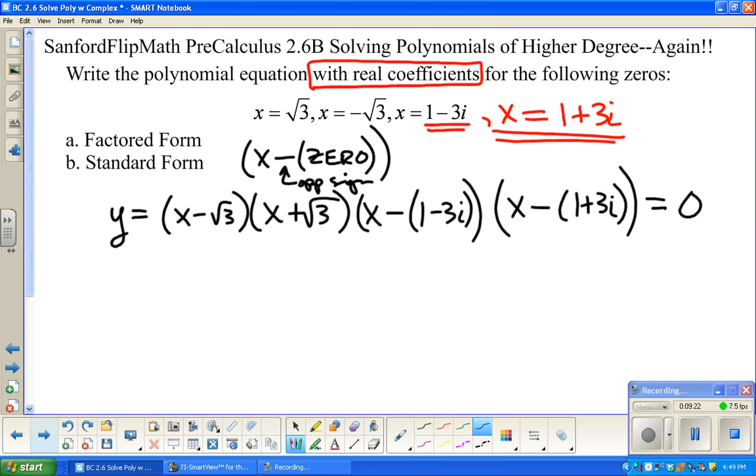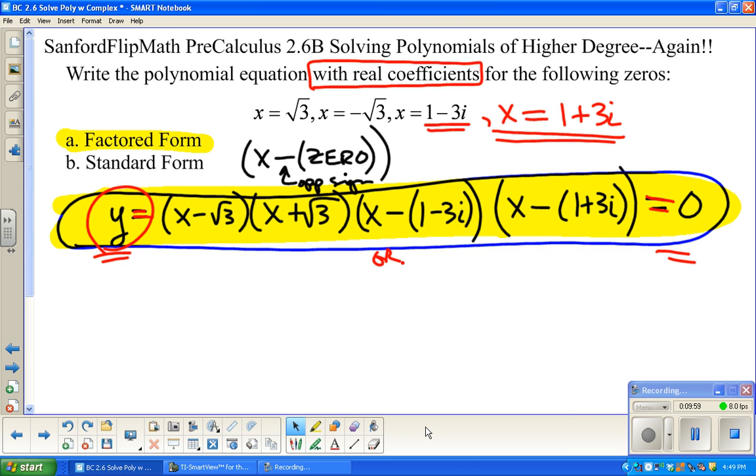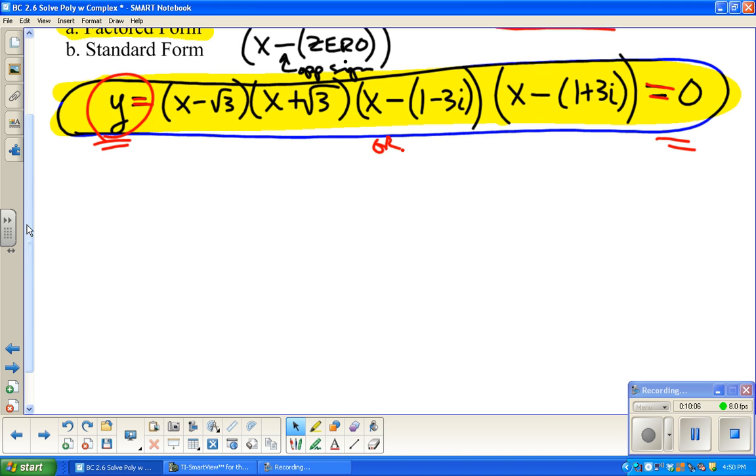So a couple things that need to happen here. First of all, this is factored form. So as far as that's concerned, factored form, here it is. Now, if I want to do standard form, then I've got a lot of multiplying to do. You don't need both y equals and equals zero. If it said a function with real coefficients, then I would definitely pick the y equals. If it says an equation, well, that has an equal sign, and so does this. So it doesn't matter which.